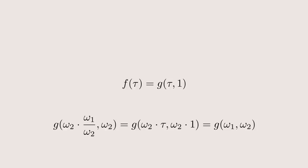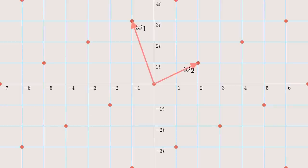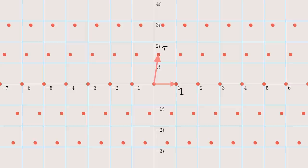Now, working with two inputs is not too great. Ideally, we'd want a function with one input and one output. Luckily, there's a solution. We define the function F of tau as G of tau and 1. This is just G of omega 1 and omega 2, rescaled by 1 over omega 2, where tau is omega 1 divided by omega 2. Now you can see why it's useful for G to be homogeneous. This corresponds to rotating and scaling the lattice of omega 1 and omega 2, so that omega 2 ends up at 1.